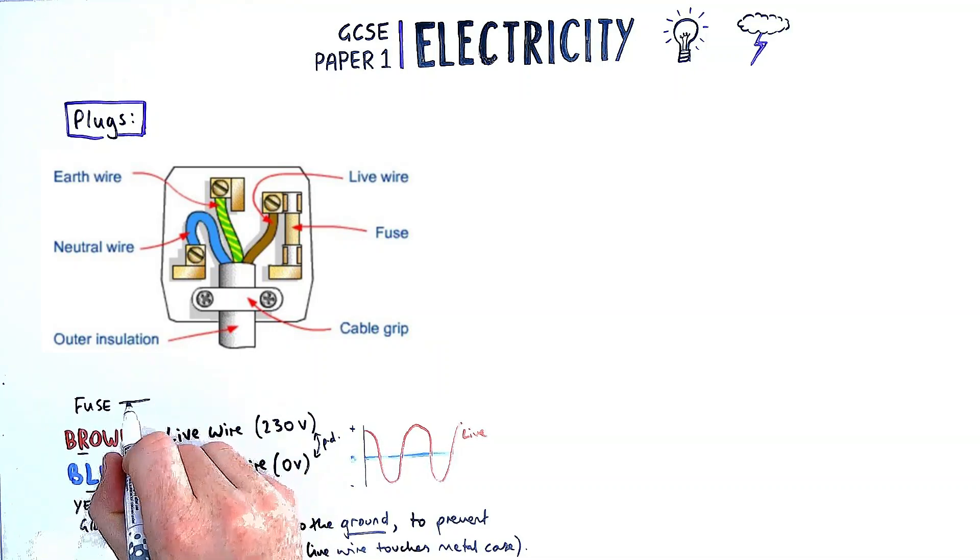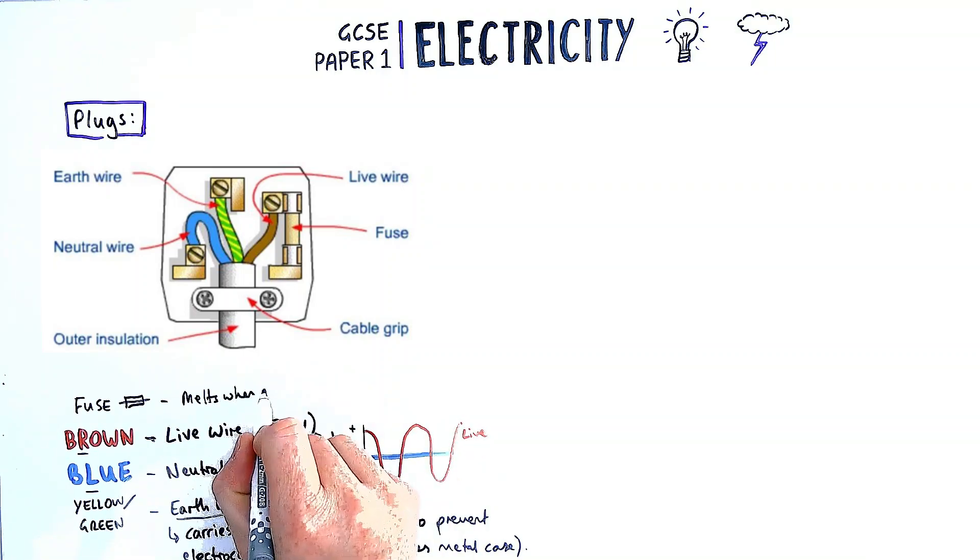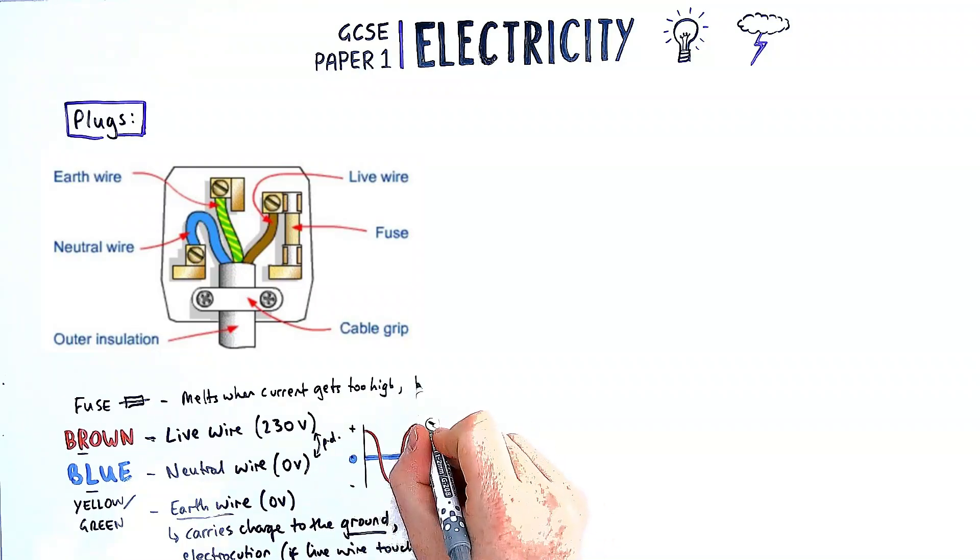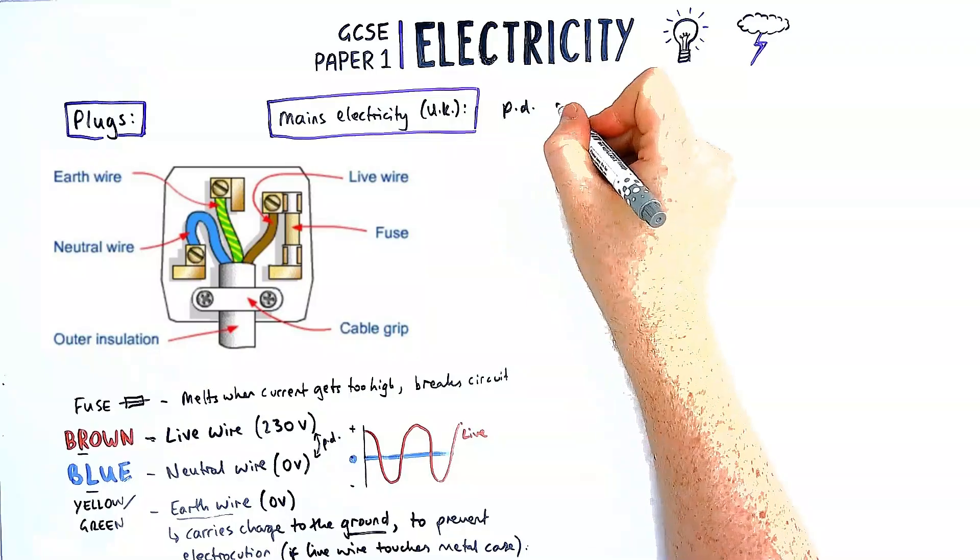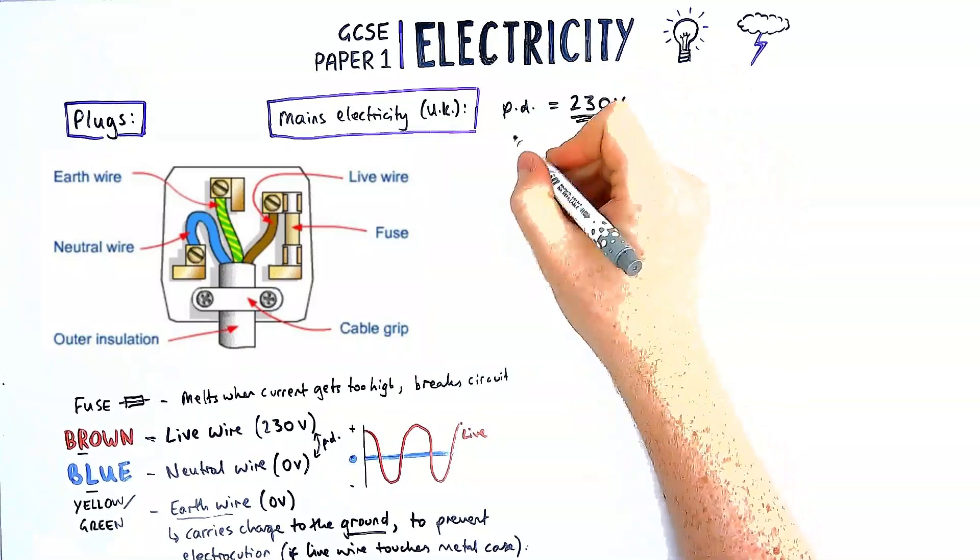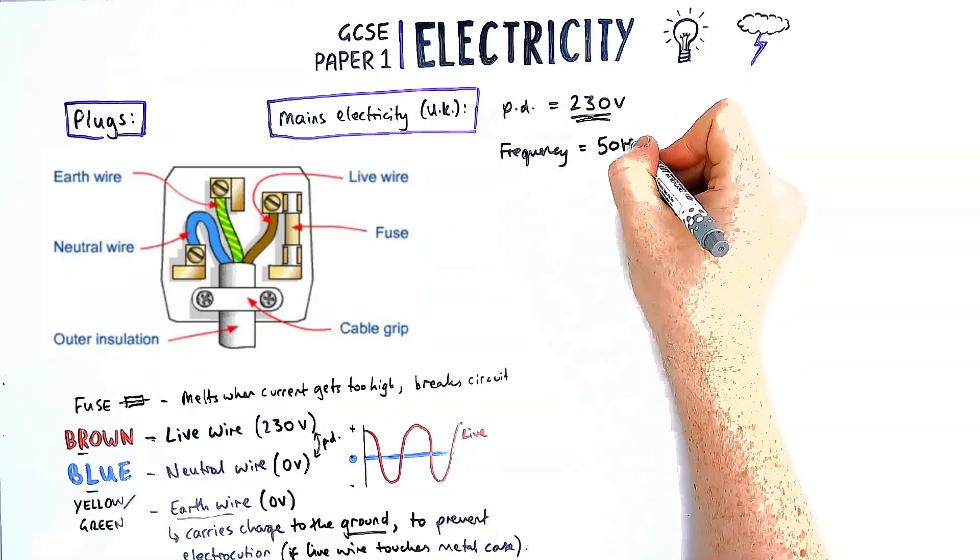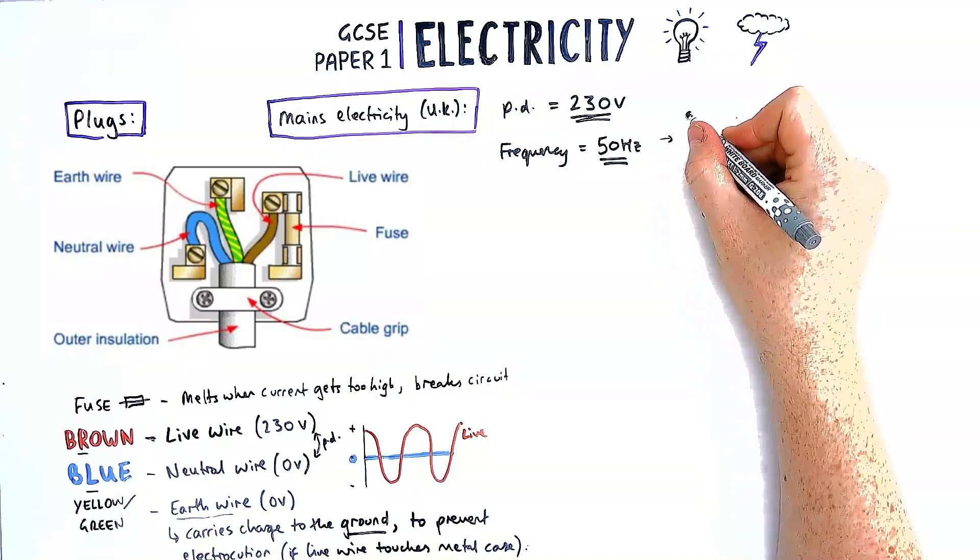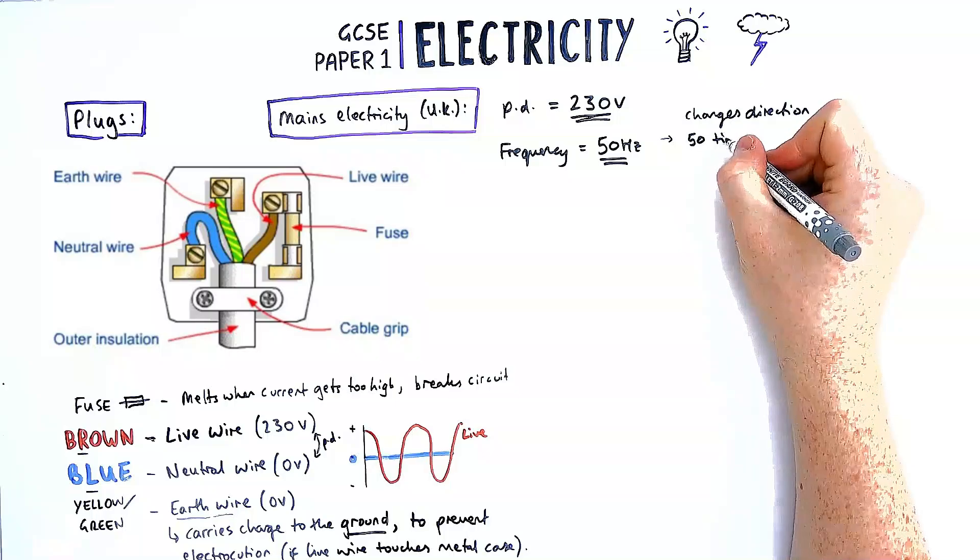Another safety feature is a fuse. A fuse contains a fuse wire which melts when the current gets too high, and this breaks the circuit altogether. In the UK that potential difference value is constant for all plugs, and all appliances are designed to run from 230 volts. The frequency provided by the mains electricity is 50 hertz, meaning the direction changes 50 times every second.